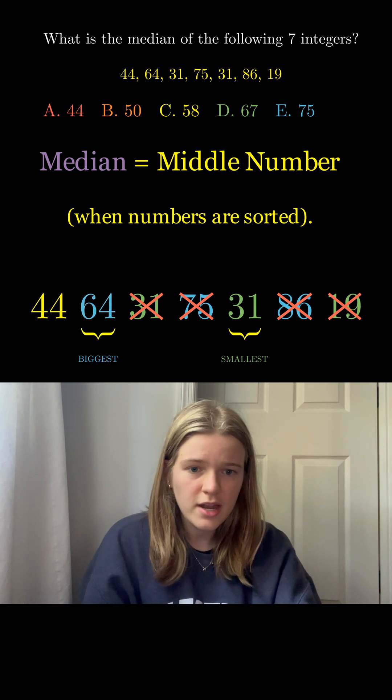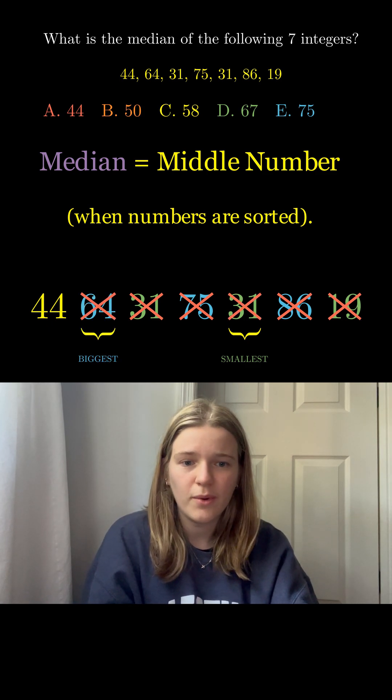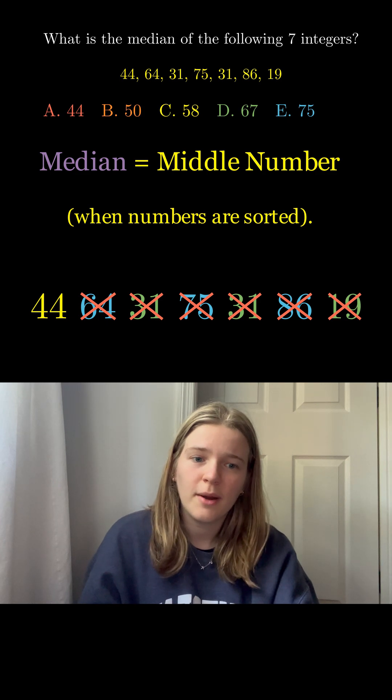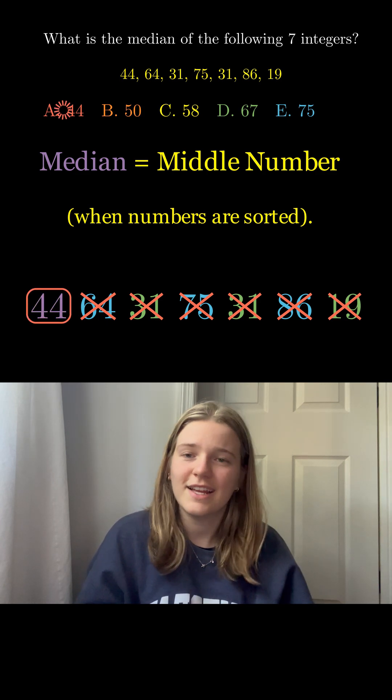The smallest number is 31. The new biggest number is 64. We cross those out and we're left with one more number, 44. The answer is A.